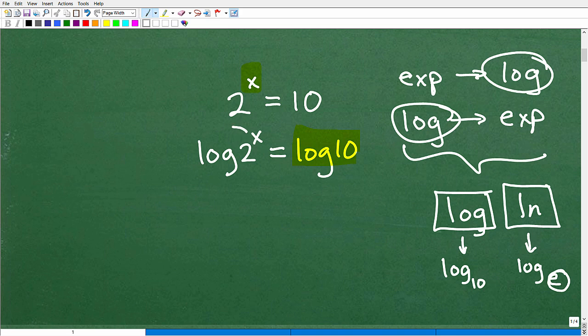Now, we have a property that says when we have the log of a power, this little exponent, this x, I can actually drop it down in front of this little expression here. So, in other words, I could put this x in front of the log, so I can rewrite this as x log 2 equals log 10.